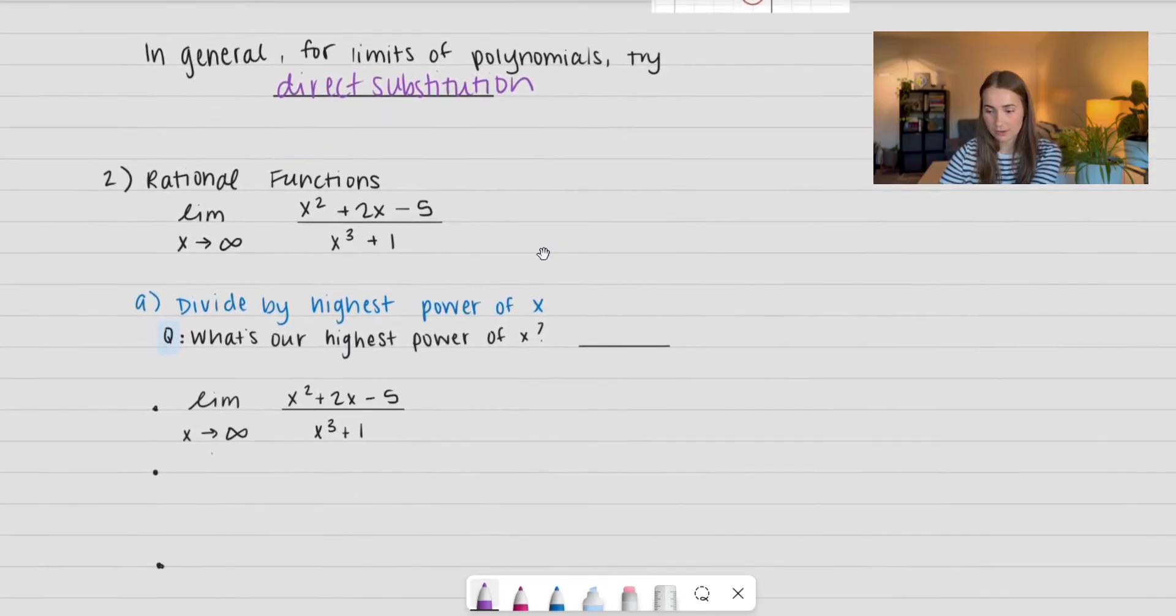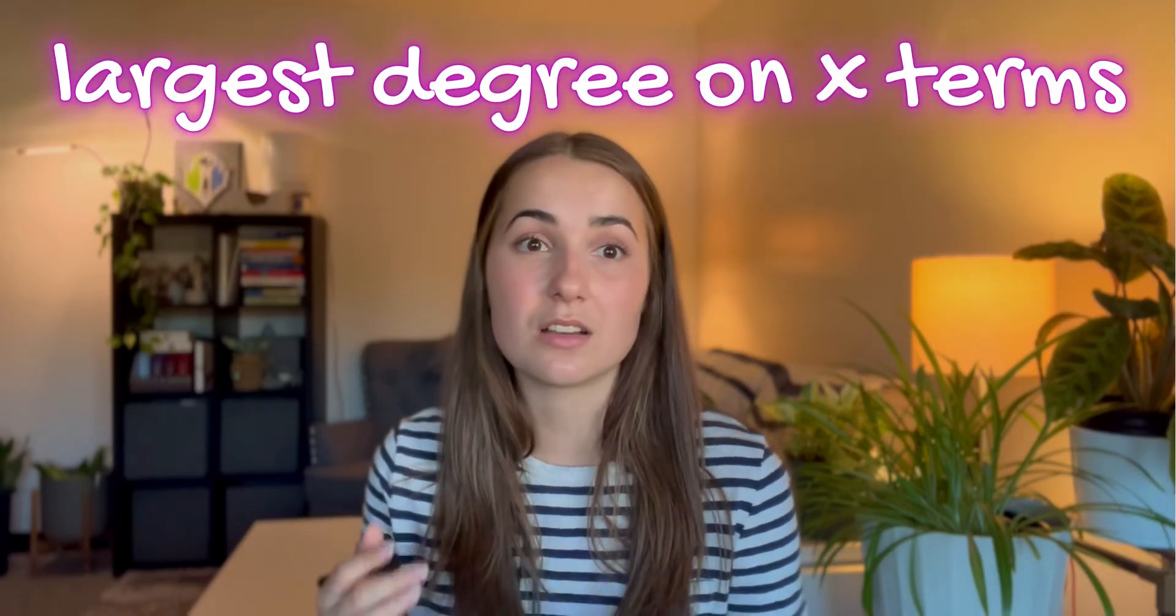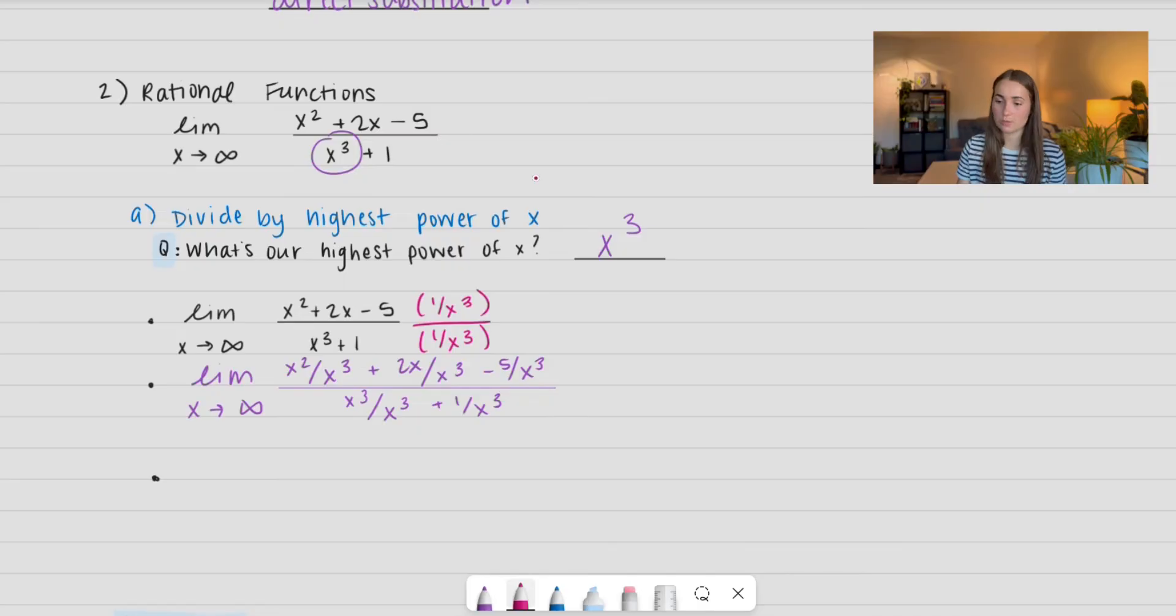So let's go ahead and look at rational functions. We have the limit as x approaches infinity of x² plus 2x minus 5 all over x³ plus 1. So there's multiple ways we can evaluate this limit. First, we're going to divide by the highest power of x. What do I mean by the highest power of x? I mean the largest degree on all of our x terms. So looking at this function, I can see that x³ is my largest degree. So I'm going to write that down here. And I'm going to divide every single term now by x³. Really what I'm doing is I was multiplying the numerator by 1 over x³ and I was multiplying the denominator by 1 over x³. So that's how I distribute it to every term. I'm multiplying it by a giant 1. That's when we're allowed to do something like that. It's not just coming out of thin air, right? So I'm going to go ahead and simplify this a bit.